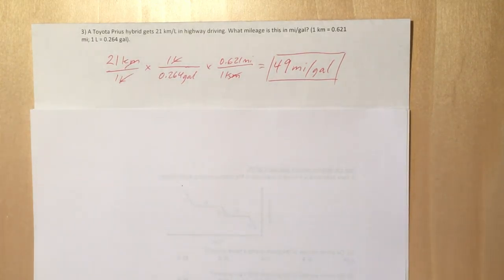You just need to find the right conversion factors, and luckily the problem gives them to you. You've got 1 liter equals 0.264 gallons, so you use that first to convert the volume units to gallons. Then you convert your distance units to miles using the other conversion factor, putting kilometers on the bottom, canceling them out, and you get miles per gallon.